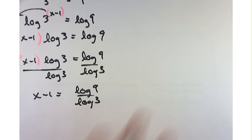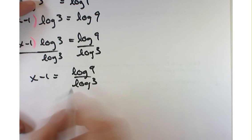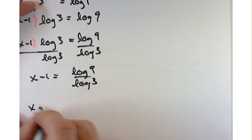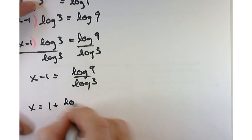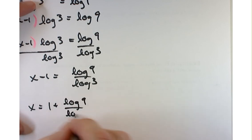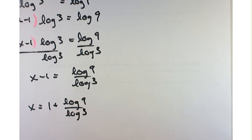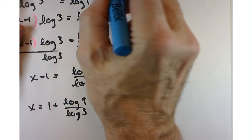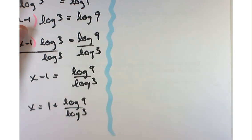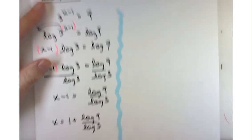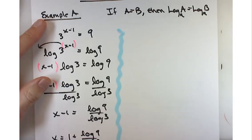That's all well and good. The only thing left to do to solve for x is add 1 to both sides, giving x equals 1 plus log of 9 divided by log of 3. After teaching this way for a while, I thought to myself — there's a better way to do this, a faster way that I think you're going to like a lot more.